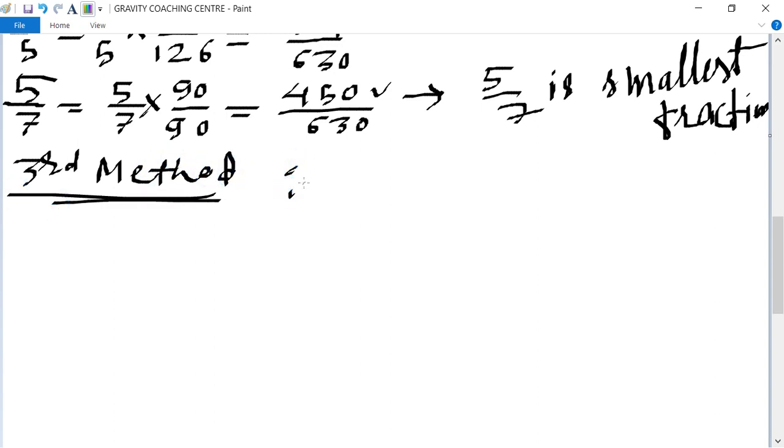Third method: divide all the numbers. So first fraction is 7 upon 6, after dividing the result is 1.17. Next one is 7 upon 9 equal to, after dividing, result is 0.77 or 0.78.